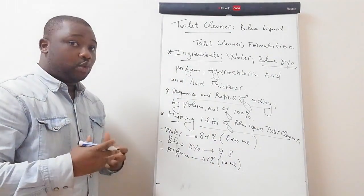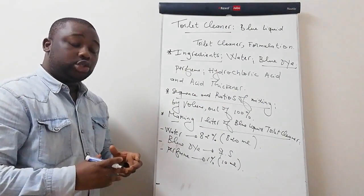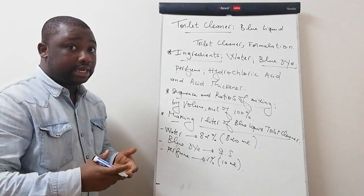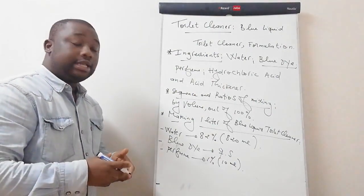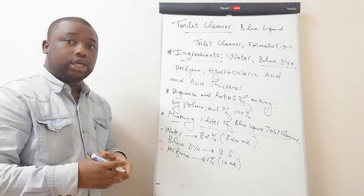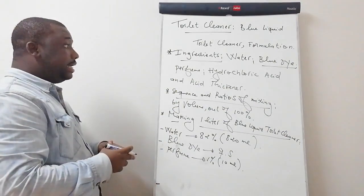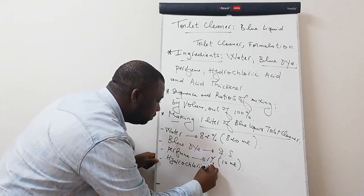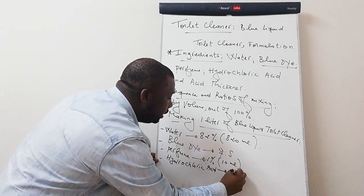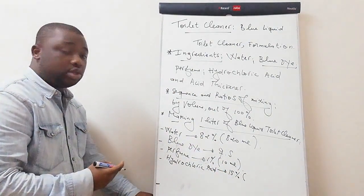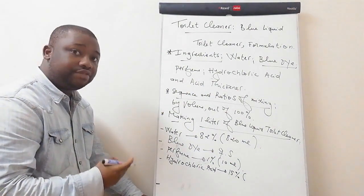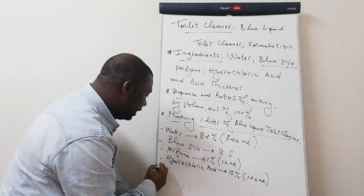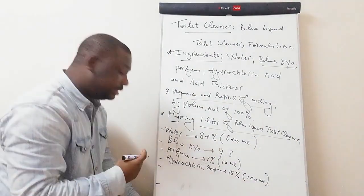When it comes to the perfume, the ratio is always between 1% to 2% of the total volume. One percent is not bad because perfumes are highly concentrated, but if you want it to smell more, you can always take it up to 2%. Then the next ingredient is your hydrochloric acid — this should be 15% of the total volume. Out of the one liter we're manufacturing, you need 150 ml of hydrochloric acid.